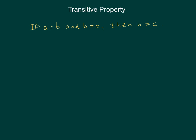The transitive property is the idea that if two things equal the same thing, they're equal to each other.